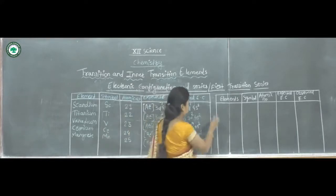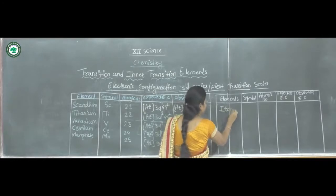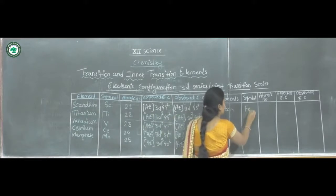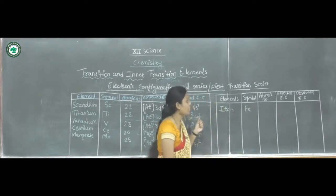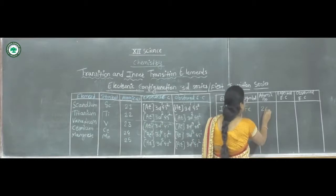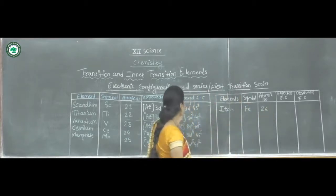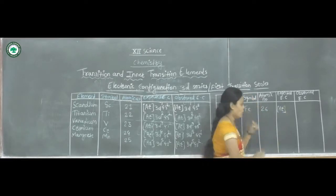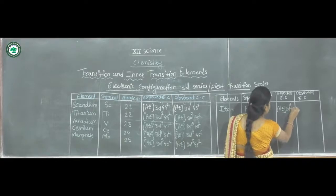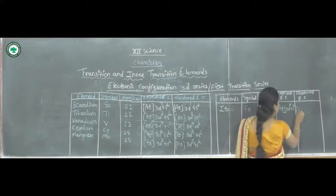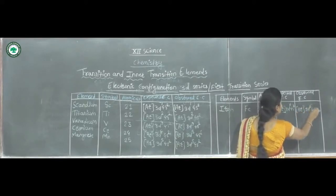The next element is Iron, symbol Fe, atomic number 26. The expected electronic configuration is [Ar] 3d⁶ 4s². The observed electronic configuration is the same: [Ar] 3d⁶ 4s².